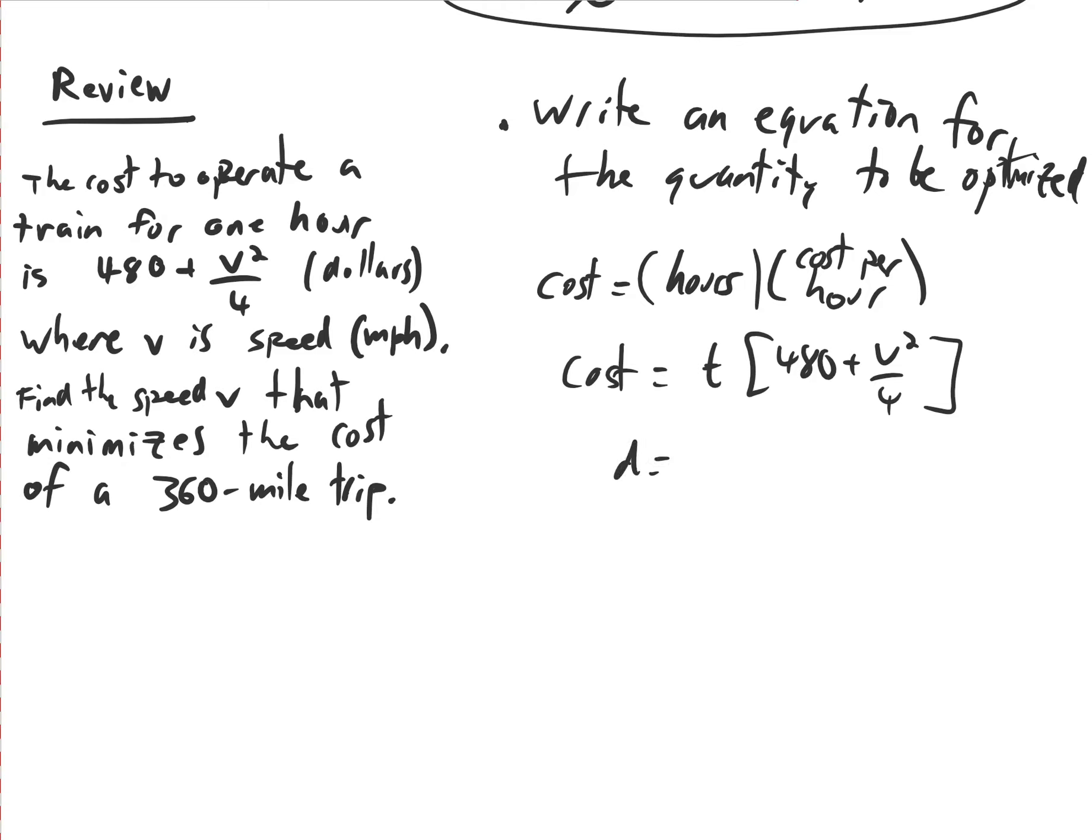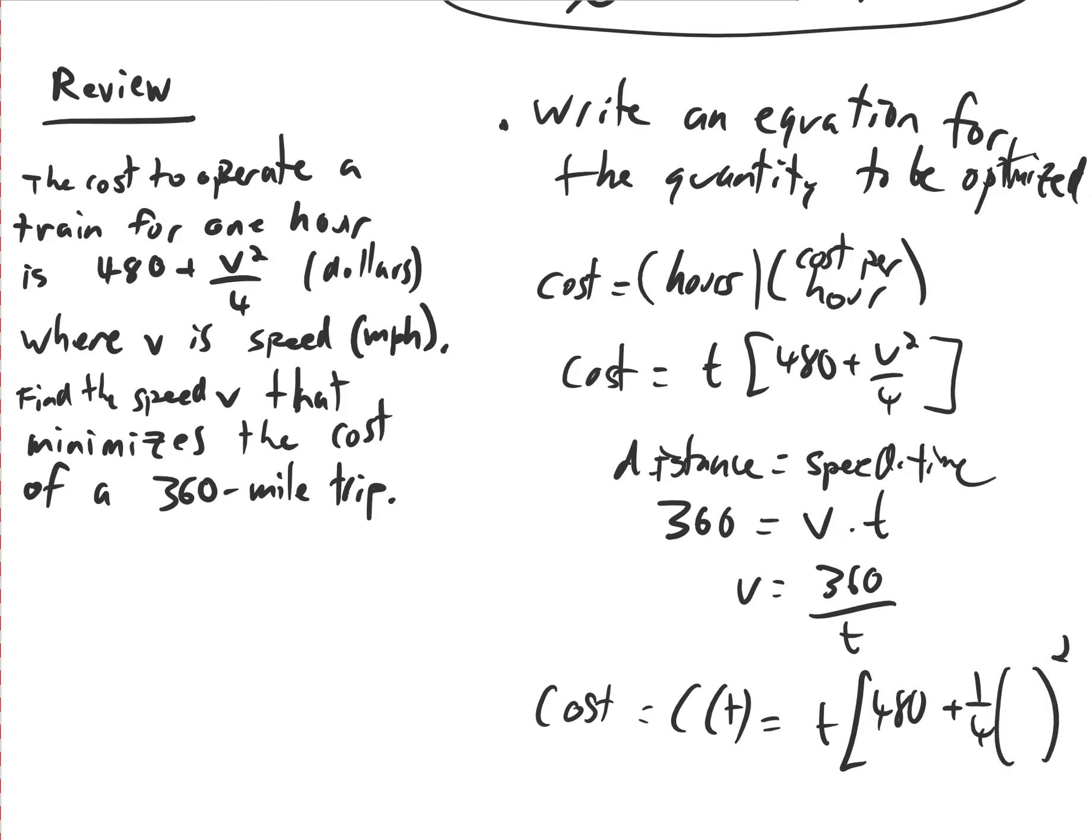We'll have to use the relationship D the distance equals speed times time. So that distance that we're traveling in this problem is 360. And it equals V times T. So if I can solve this for V or I can solve it for T and get an equation with just one variable. I'll solve it for V. So V equals 360 over T. This lets us rewrite our equation as a function of just one variable, C of T. So we've got T, 480 plus 1 fourth, this expression squared, 360 over T.